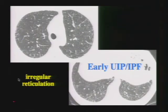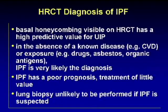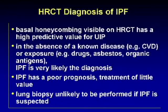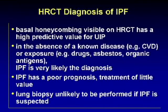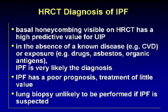If you see a patient with UIP-IPF in an early stage, all you will see is a little bit of irregular reticulation in the posterior subpleural lung bases — quite nonspecific at this stage. As far as diagnosis of IPF using high-resolution CT: basal honeycombing visible on high-res has a high predictive value for UIP. In the absence of a known disease such as collagen disease, drug exposure, asbestos, or organic antigens, IPF is very likely the diagnosis. If IPF is suspected, lung biopsy is very unlikely to be performed.